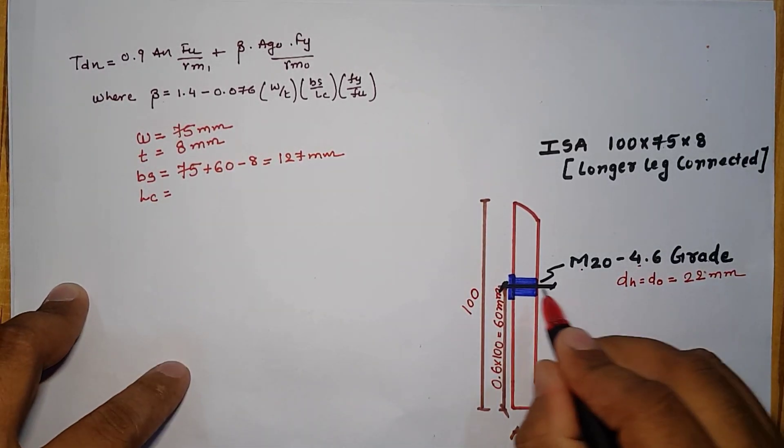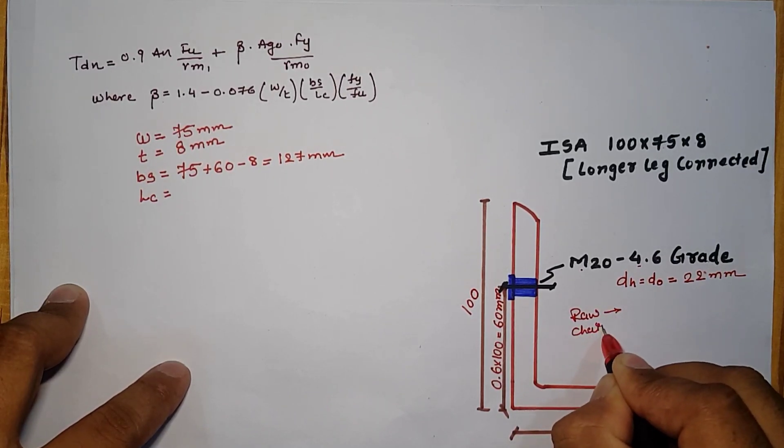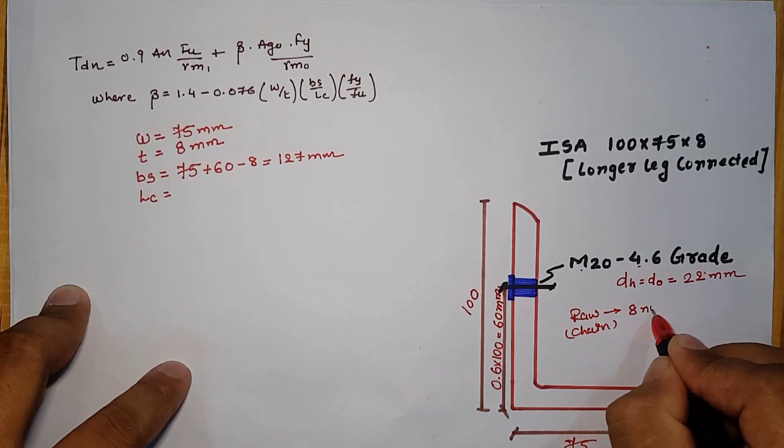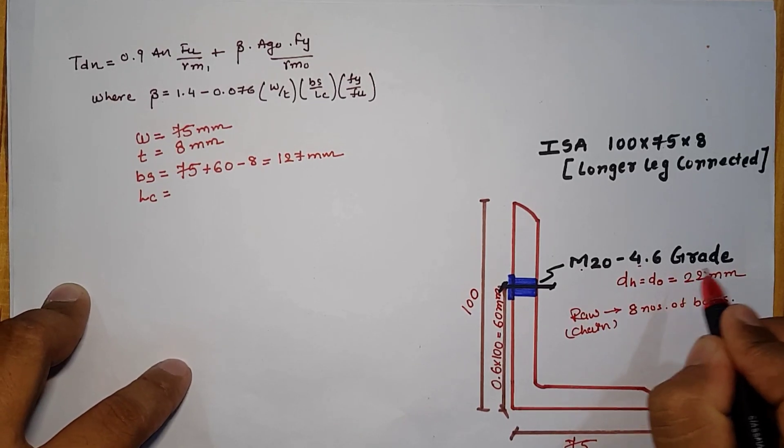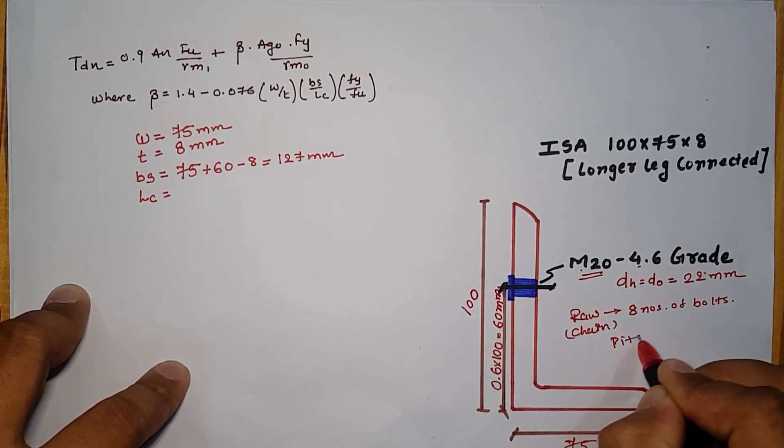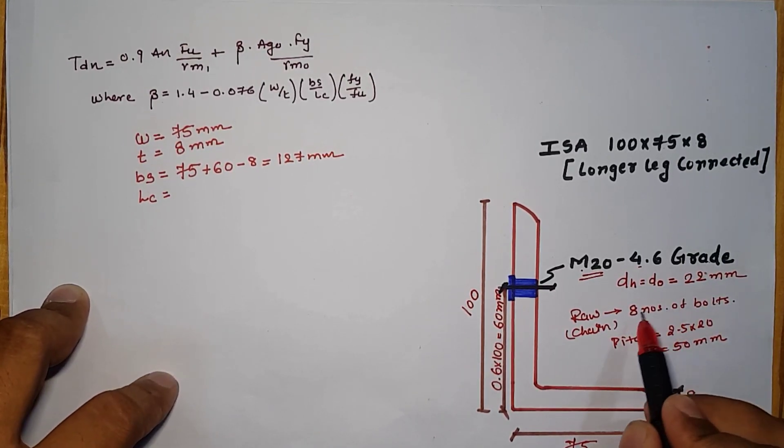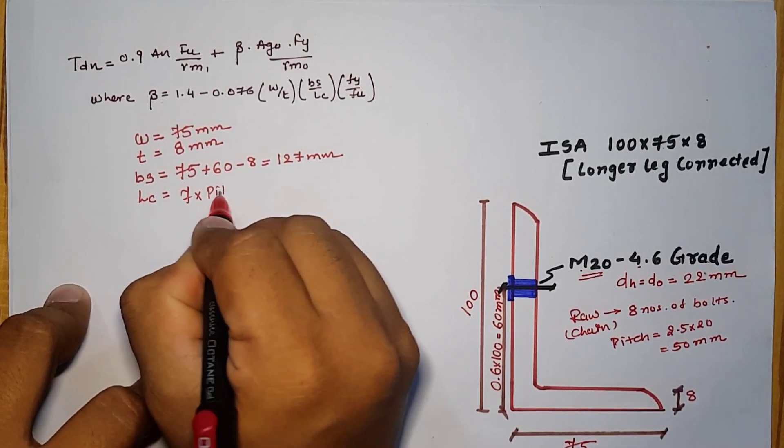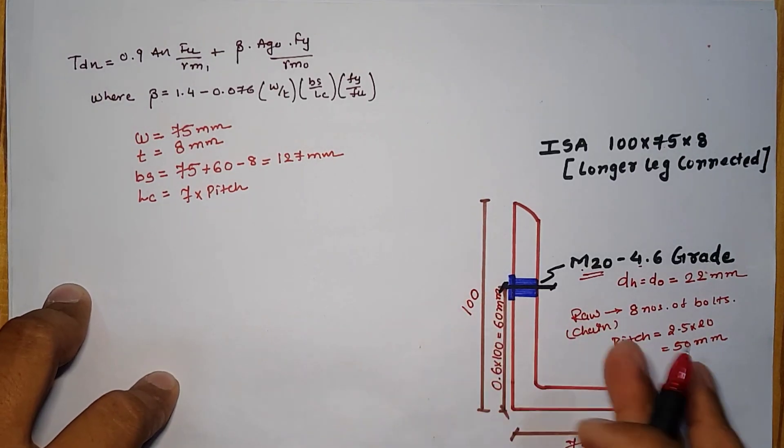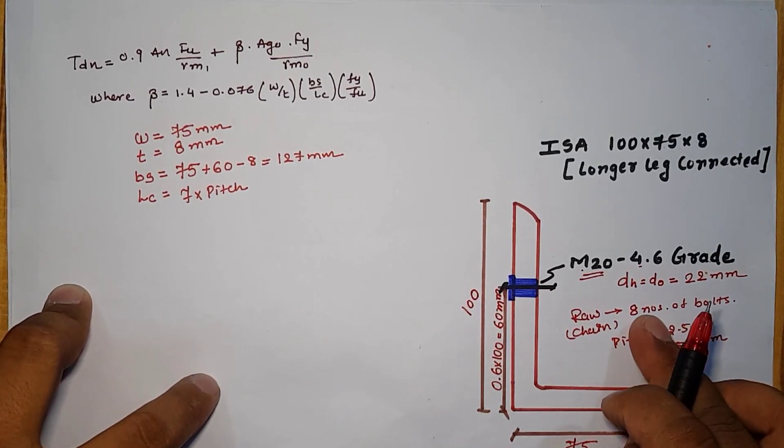Next part LC. For example, this row bolting, the chain bolting is for 8 numbers of bolt and according to the M20 bolt, the pitch value is equal to 2.5 into 20 which is equal to 50 mm. Distance between first and last bolt, it means that the first and eighth number of bolt is 7 times the pitch value.